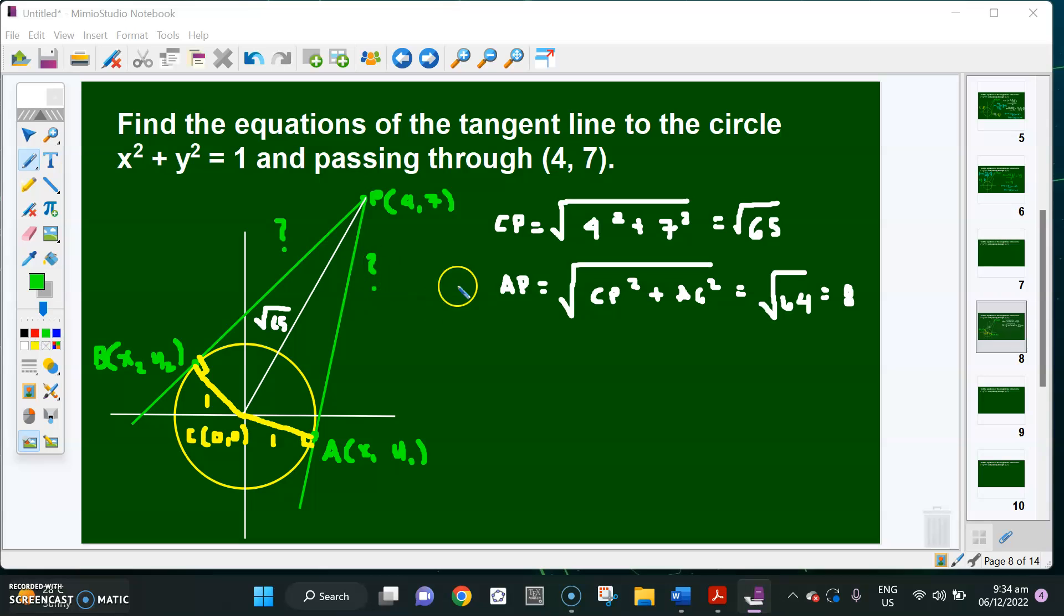Since we have the distance of AP, I can create an equation. So that is 8 squared equals (x minus 4) squared plus (y minus 7) squared. Simplifying this one, I'm going to have 64 equals x squared minus 8x plus 16 plus y squared minus 14y plus 49.